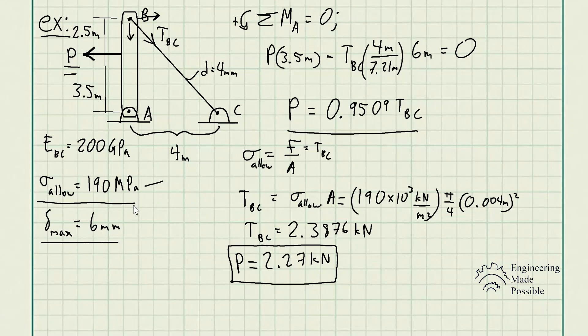This is the first problem using this criteria. However, we must check the other criteria that we're given. It must not deform more than 6 millimeters. That's the maximum deformation. Using the maximum deformation equation, we know we're talking about the cable. So that tension BC times the length of that cable divided by modulus of elasticity times the cross-sectional area.